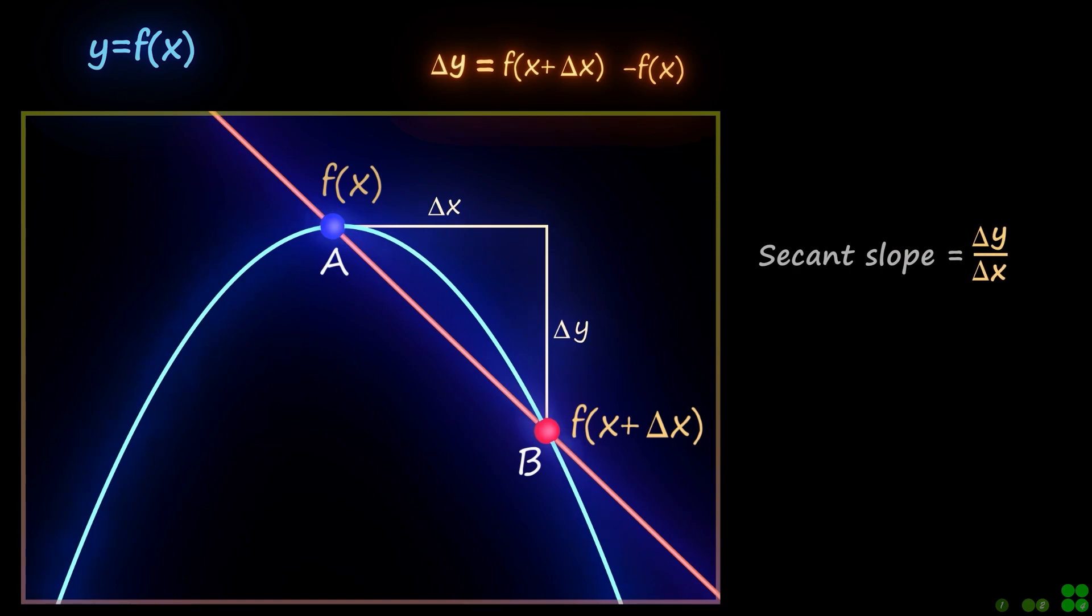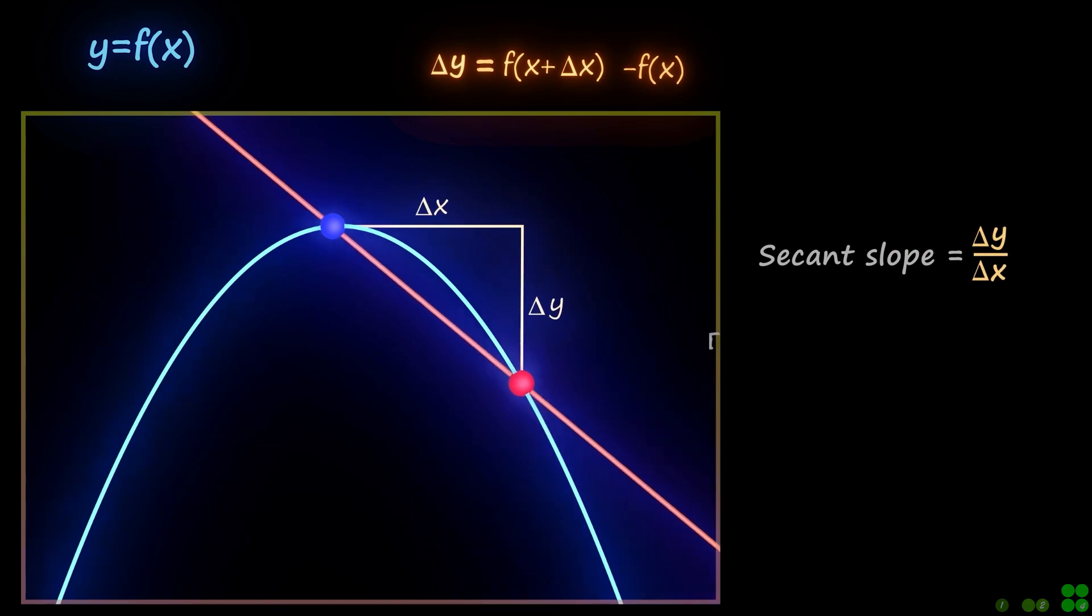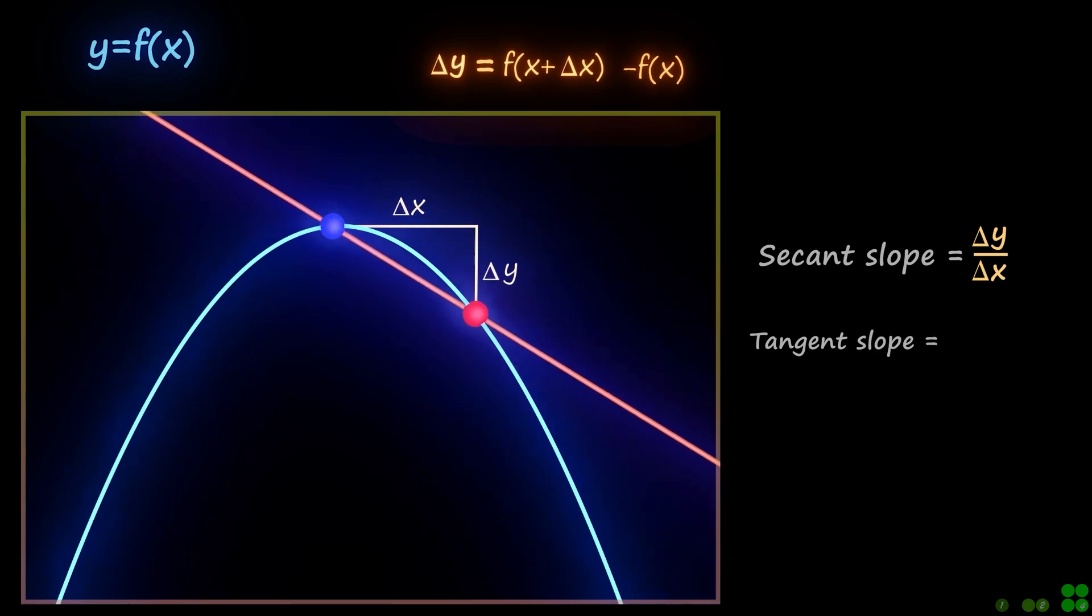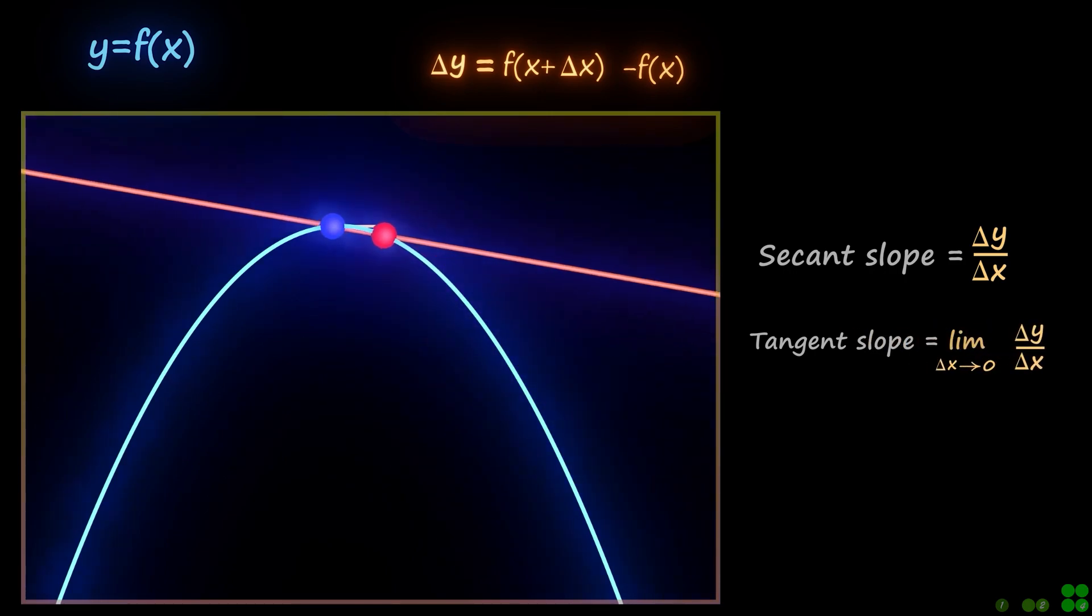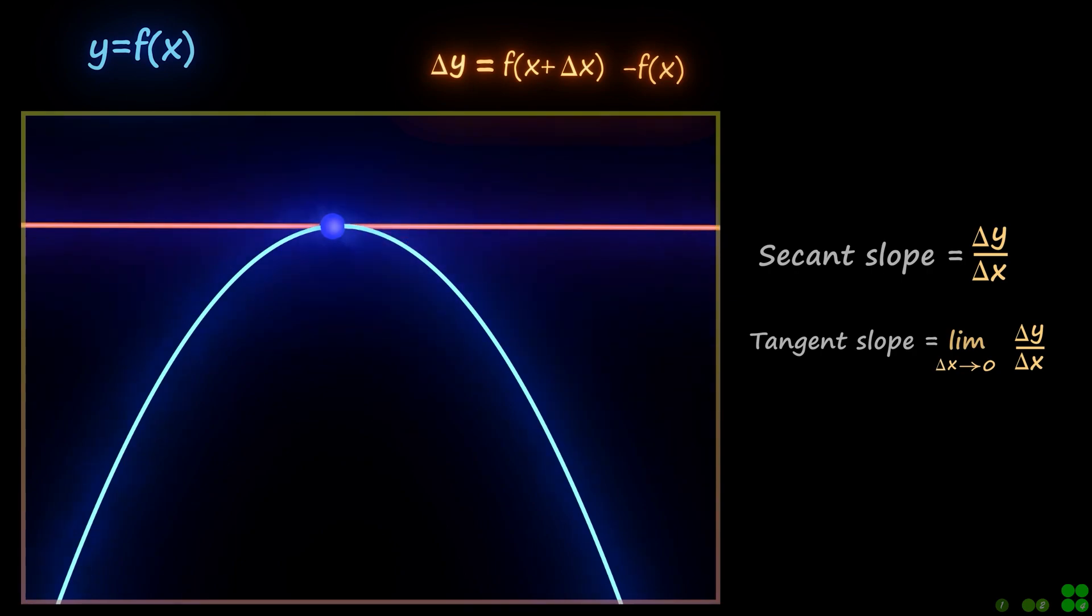Let's move point B towards point A. Note that as delta x approaches zero, the slope of the secant line approaches the slope of the tangent line at point A.